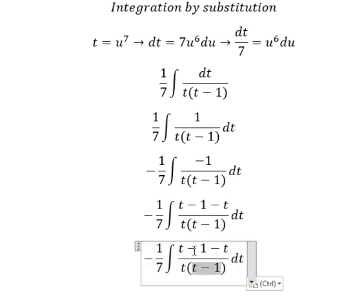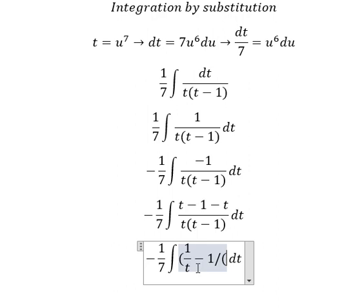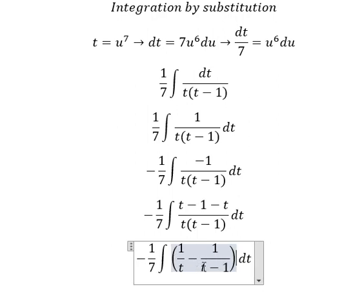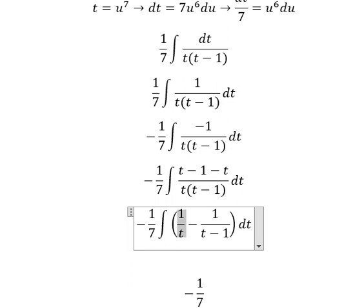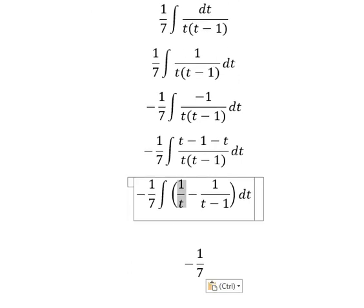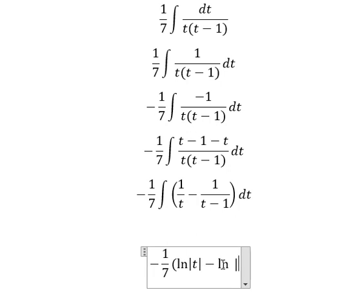This one divided by this one — we have one: t divided by t gives us one. The integration of this gives us nothing but the absolute value of t, and the second term as well.